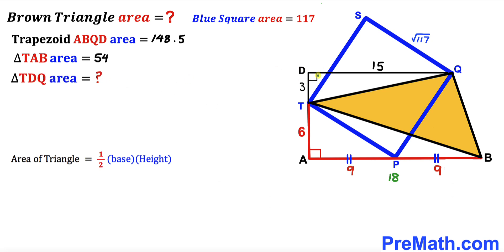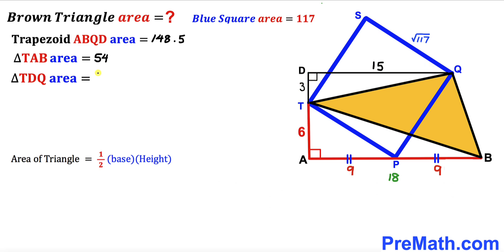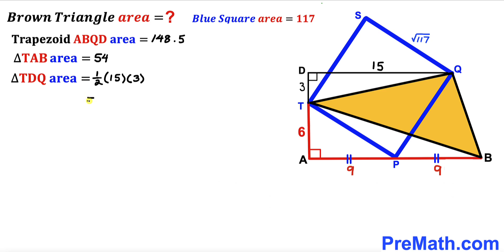Finally, we calculate the area of right triangle TDQ. Using the same area formula: area equals one half times base times height. The area is one half times 15 times 3, which gives us 22.5 square units.